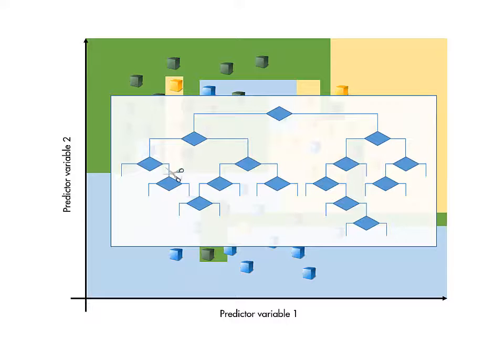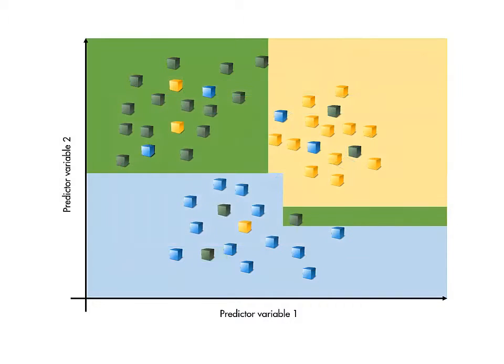You can prune a tree, that is, reduce the number of splits, to create a simpler model that may have a higher resubstitution loss but better generalization to new data.